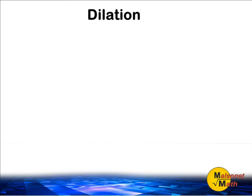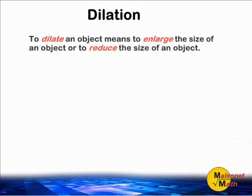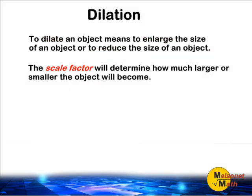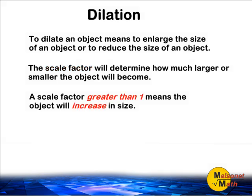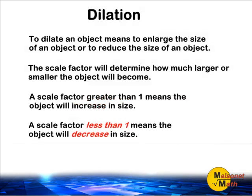In this tutorial, we are going to dilate an object on the coordinate plane. To dilate an object means to enlarge the size of an object or to reduce the size of an object. The scale factor will determine how much larger or smaller the object will become. A scale factor greater than 1 means the object will increase in size, and a scale factor less than 1 means the object will decrease in size.